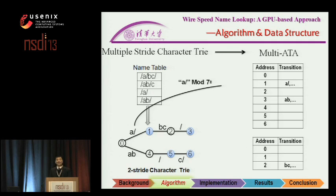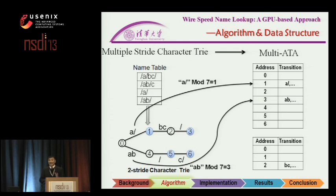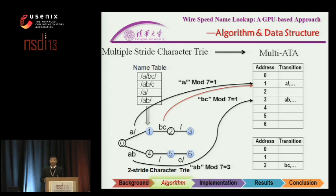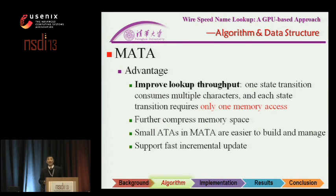To address this, we designed another data structure called multi-ATE, or MATE. The idea is to separate the whole ATE into many small ATEs. In this example, we match entries like A-slash and AB into the first ATE. But when mapping BC into the first table, there is a conflict — so BC is stored in another table. MATE is fast, greatly compresses memory occupation, is easy to manage and build, and importantly, supports fast incremental updates.